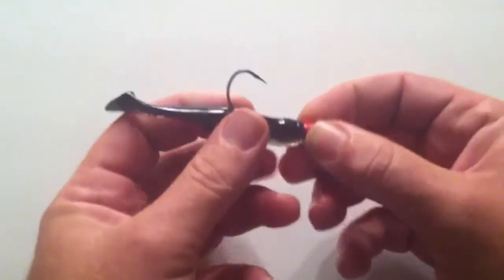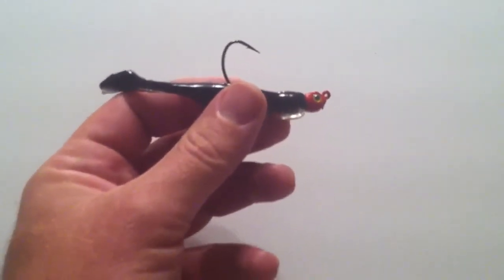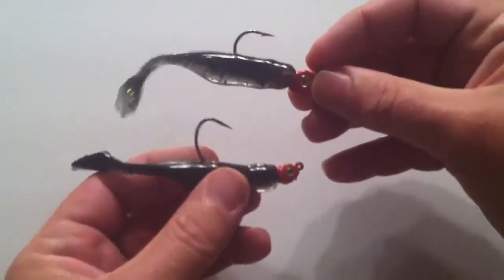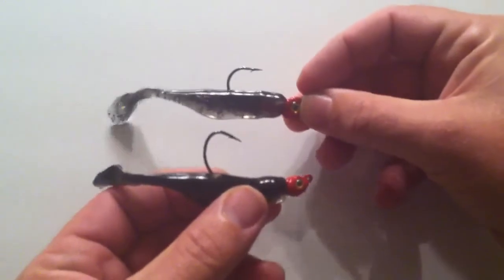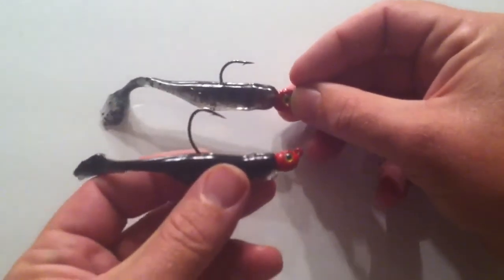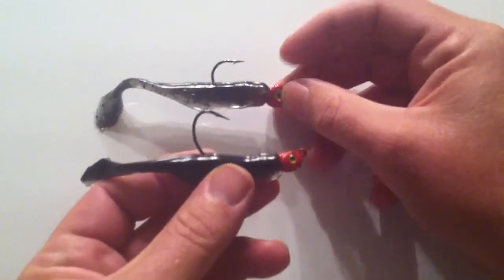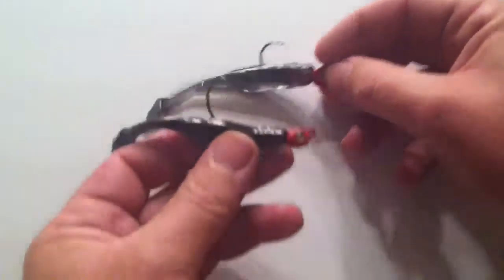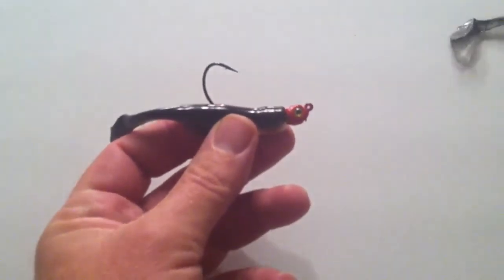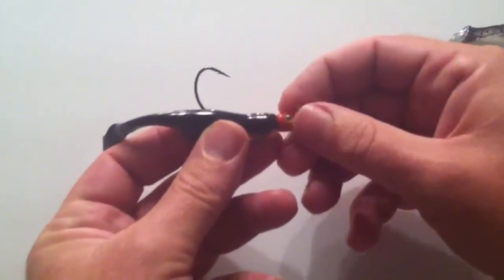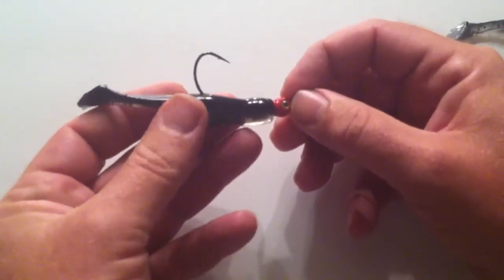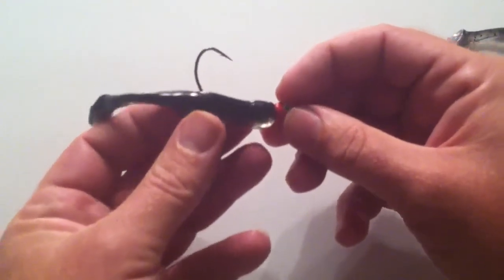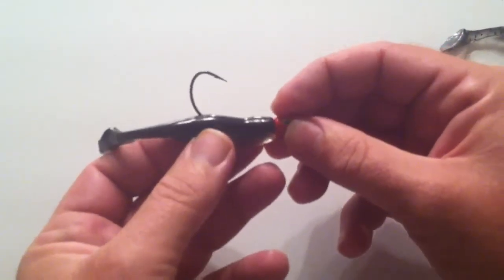Again, there's the standard jig head that I know a lot of guys use. We switched because we were losing three to four fish per trip using this standard style jig head. A buddy of ours mentioned that the scorpion jig heads might be the way to go, and since switching to the scorpion we've had two fish pull off, and those were probably more angler error than the fault of the scorpion jig head.